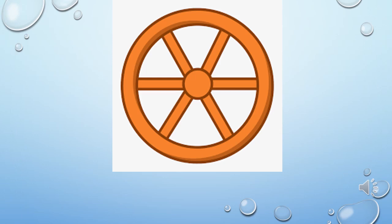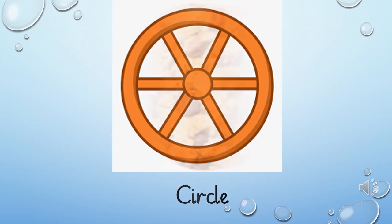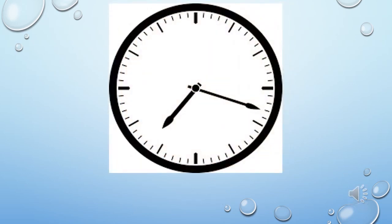Dear students, I hope you have enjoyed the video and learnt about the shapes circle and square. Now I'll show you some shapes and we'll learn about the spelling. The shape of this wheel is circle. How to write circle? C-I-R-C-L-E, Circle. What is the shape of this cooking pot? Yes, it's a circle. The shape of this clock is also a circle. C-I-R-C-L-E, Circle.